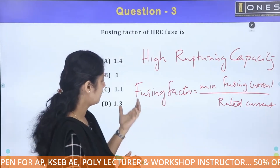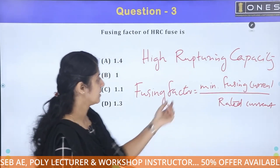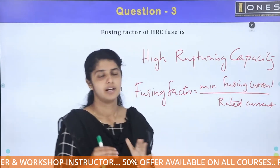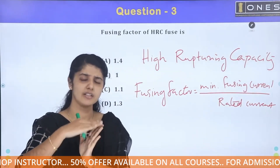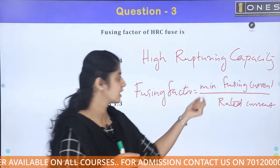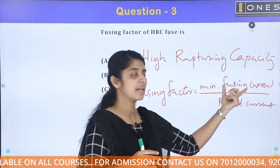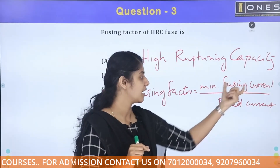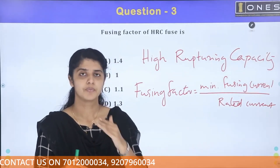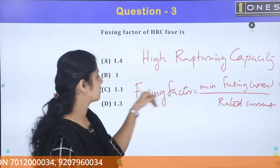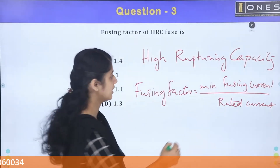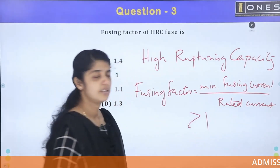The fusing factor is defined as the minimum fusing current divided by the rated current of the fuse. This value is always greater than 1, because the minimum fusing current must exceed the rated current for the fuse to operate correctly.